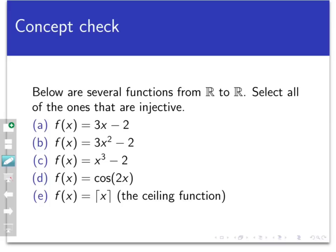So the answers here are A and C. Let's rule out the other three first and see why those are not injections. To show a function is not an injection, we just need to find one pair of inputs that are different that map to the same output.